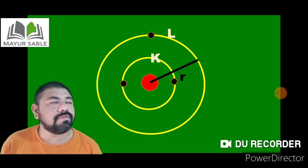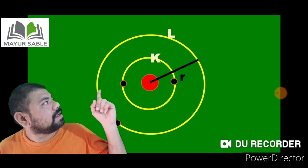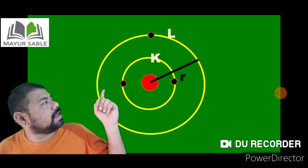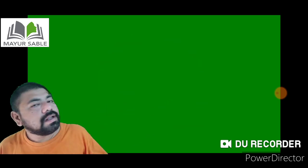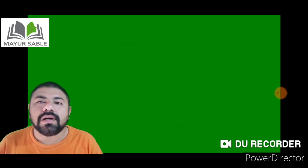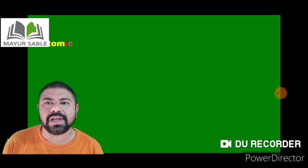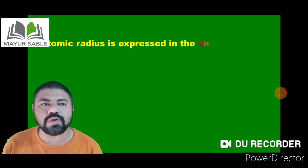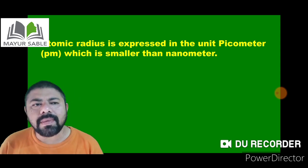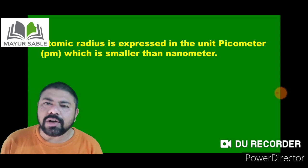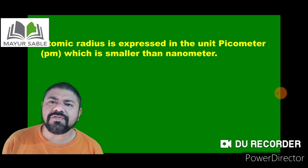In the diagram, the nucleus is centrally situated in the atom. The outermost shell surrounds it, and the distance between the nucleus and the outermost shell is the atomic radius of that atom. Remember, the atom is a very tiny species, so its radius is expressed in a special unit.